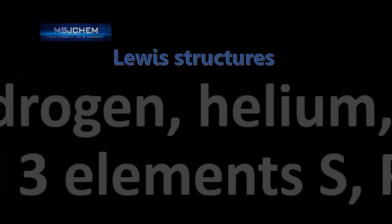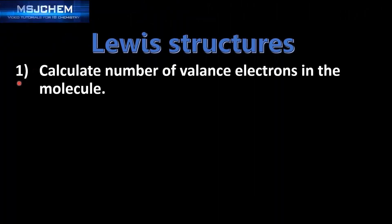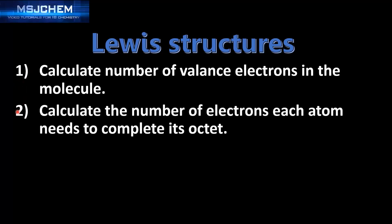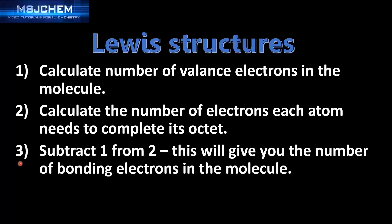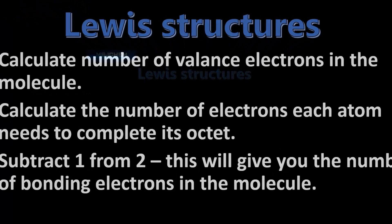Next we'll go through the steps of drawing Lewis structures. The first step is to calculate the total number of valence electrons in the molecule. Second, you calculate the number of electrons each atom needs to complete its octet. Third, you subtract step 1 from step 2, which gives you the number of bonding electrons in the molecule. Let's look at an example.